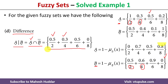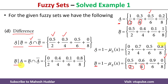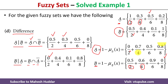For the difference B minus A, it is equivalent to fuzzy set B intersection the complement of fuzzy set A. We know B and we know the complement of A. Intersection means taking the minimum degree of membership. For element 2, degree of membership in B is 0.5 and in A complement is 0, so 0 is minimum. For element 4, 0.4 is minimum. For element 6, 0.1 is minimum. For element 8, 0.3 is minimum.